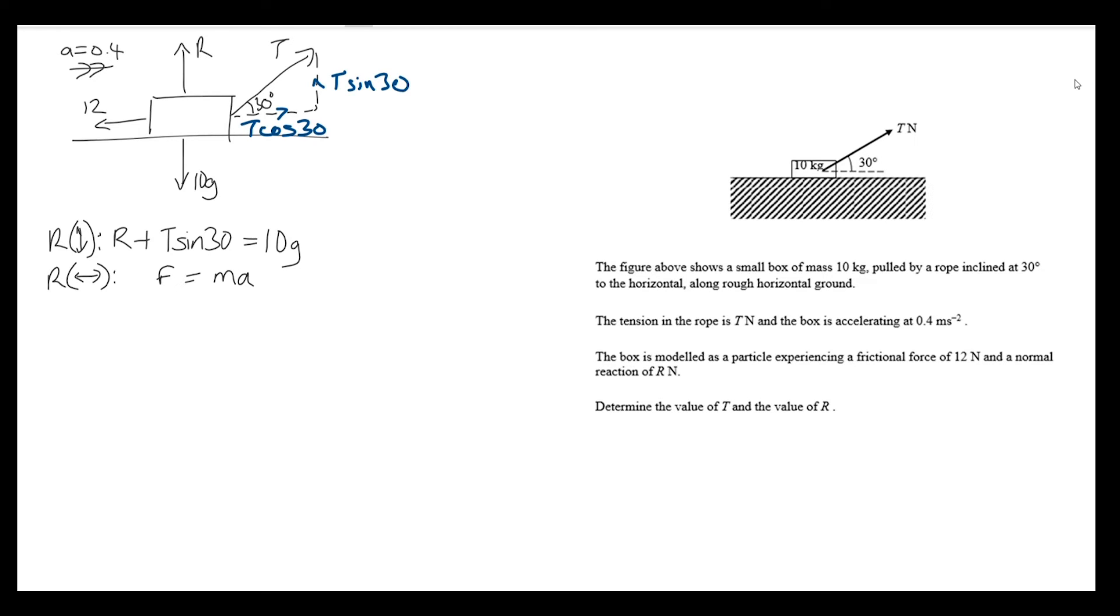Thinking about both directions, positive and negative, what is the resultant force? We have t cosine 30 in the positive direction and 12 in the negative direction. So t cosine 30 minus 12 should equal the mass times the acceleration, which is 10 times 0.4.